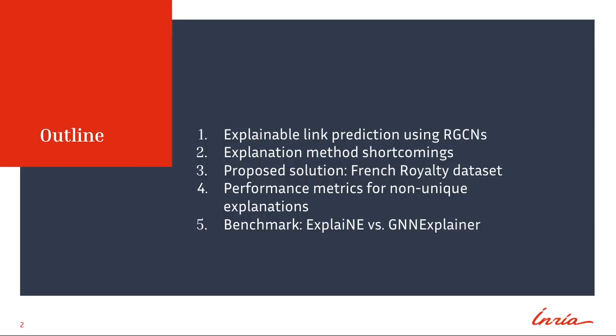This presentation is outlined as follows. First we discuss explainable link prediction using relational graph convolutional networks. We then discuss explanation method shortcomings. We will then discuss our proposed solution and discuss performance metrics for non-unique explanations. Lastly, we benchmark state-of-the-art explanation methods using the proposed dataset and metrics.